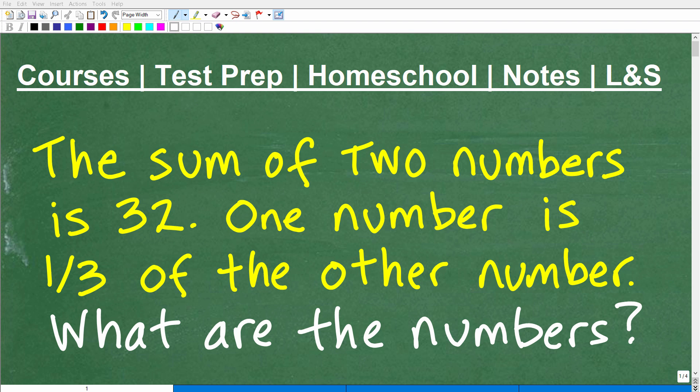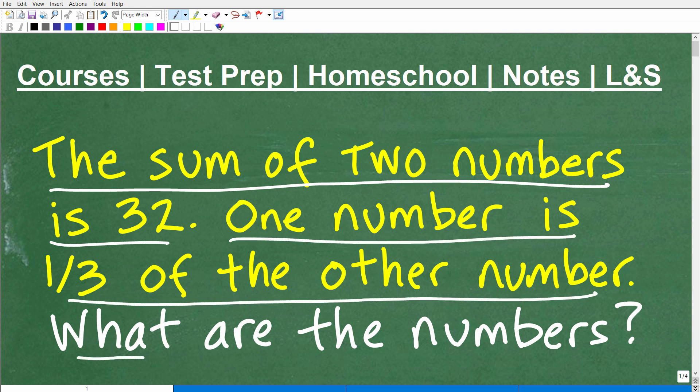Okay, let's go ahead and figure out this nice, lovely little math word problem. And the first step, of course, is to read the problem. So let's go ahead and do that right now. It says the sum of two numbers is 32. One number is one-third of the other number. What are the numbers?